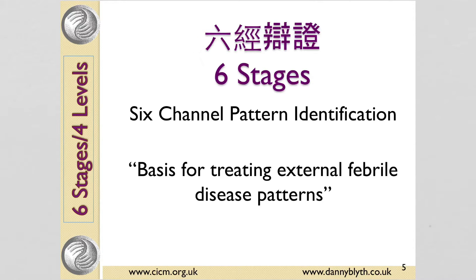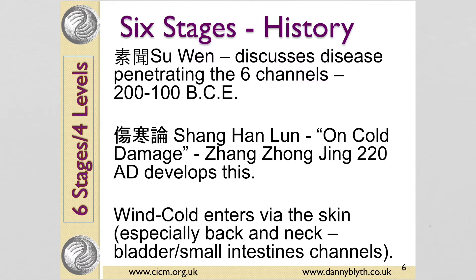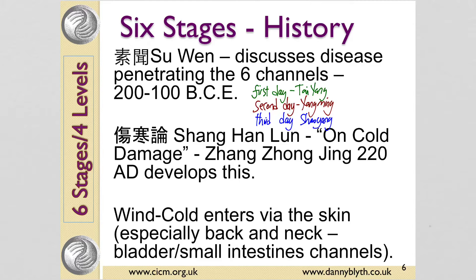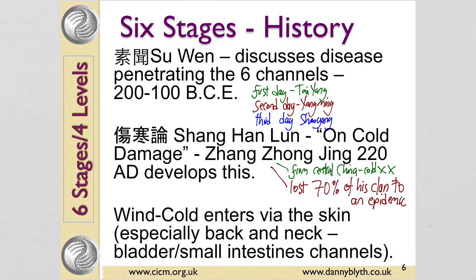So the six stages, or more accurately, the six-channel pattern identification. This concept was first discussed in the Suwen, which is the Plain Questions, although it was a little different to how we understand it now. It was a book written by Zhang Zhongjing called the Shang Han Lun on cold damage which really developed this idea. It was originally two books that got divided up by the doctor who wrote the Pulse Classic. And this discussed wind cold and the way it penetrated the skin and progressed deeper and deeper into the body.